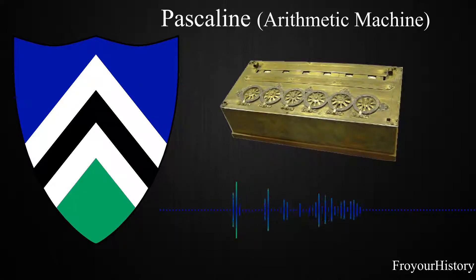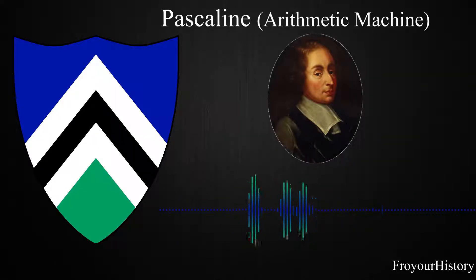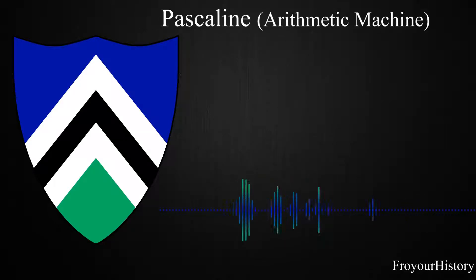The Pascaline, also known as the arithmetic machine, was invented by Blaise Pascal between 1642 and 1644. He invented it for his father, a tax collector. It could only do addition and subtraction. You added by turning the dials clockwise and subtracted by turning them withershins. He built 50 of them. It was the first business machine.